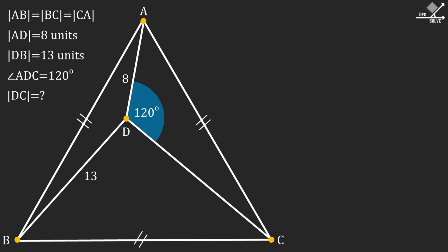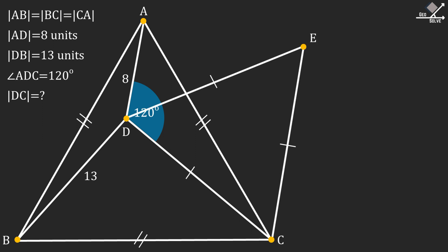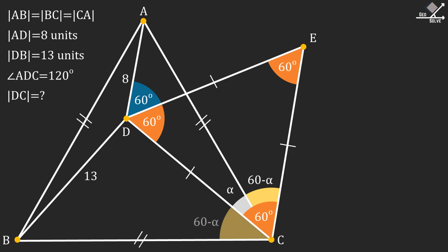First, let's pick a point E such that triangle EDC is an equilateral triangle. And let's write down the angles we know. Now let's call this angle as alpha. Then this angle will be 60 minus alpha. And since ABC is an equilateral triangle, this angle will also be 60 minus alpha.